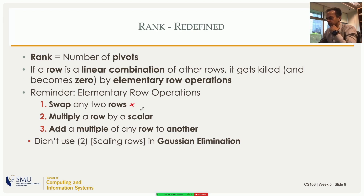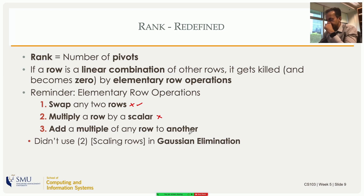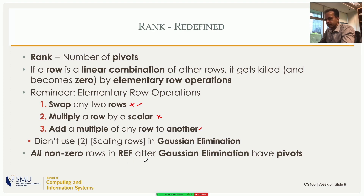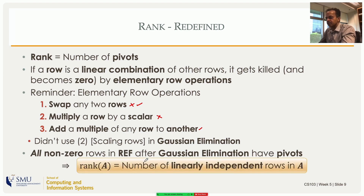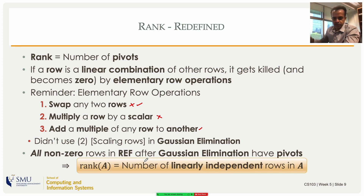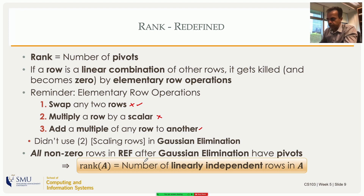As a reminder, we have three elementary row operations: swap two rows (which we tried hard to avoid but had to use sometimes), row scaling (which we did not use), and adding a multiple of one row to another — the mainstay of Gaussian elimination used to zero out elements in a column. All non-zero rows in REF will have pivots, which implies the rank of a matrix is the number of linearly independent rows. Gaussian elimination makes linearly dependent rows into zero rows.